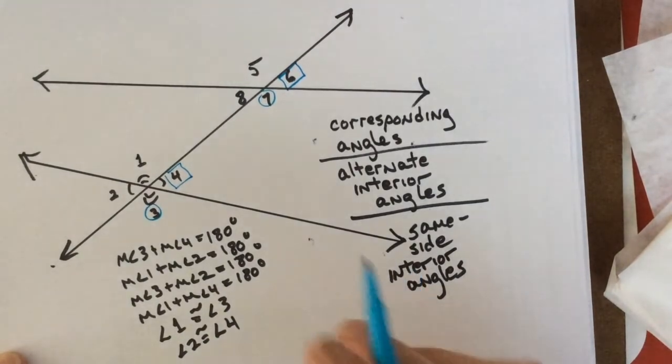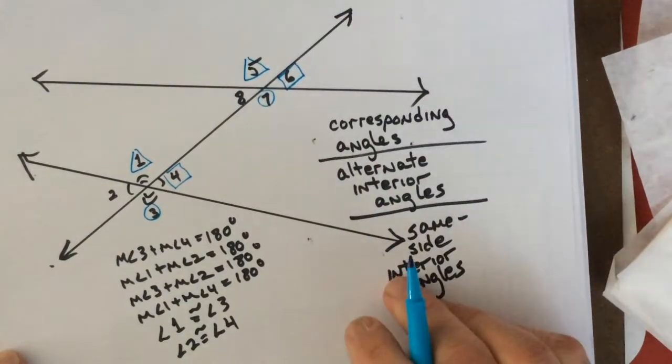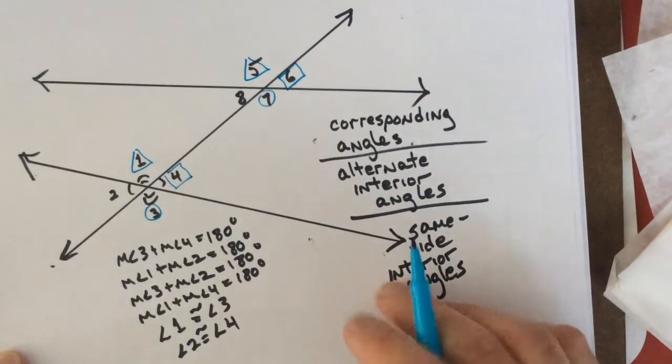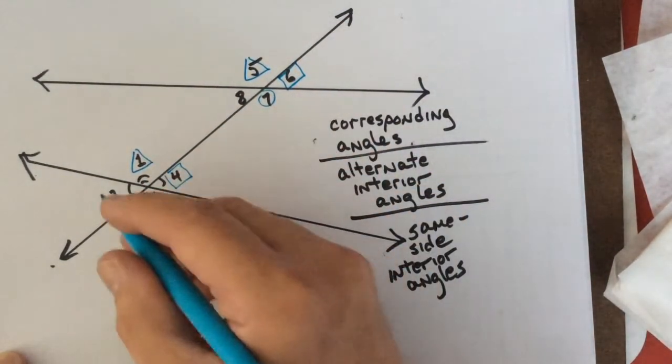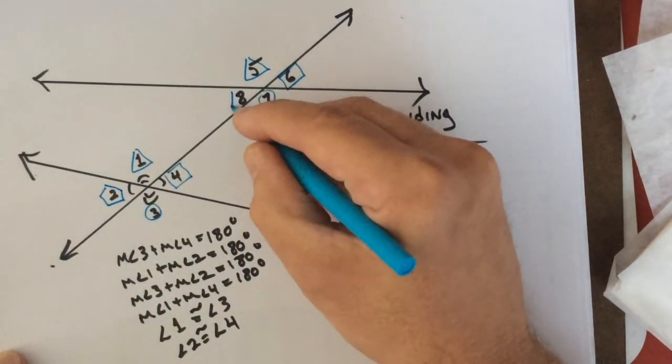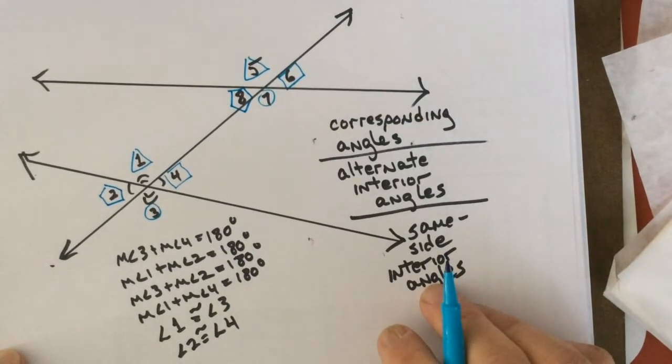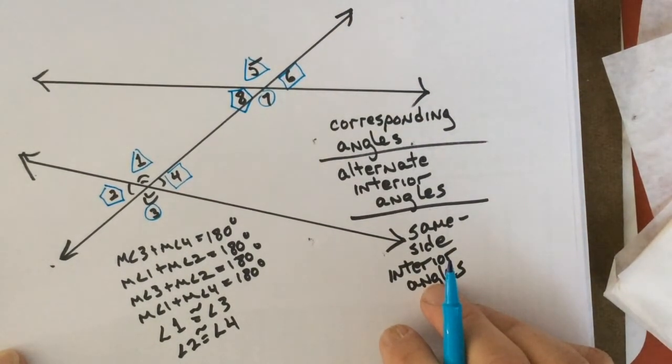One and five. They need to be... they're relating to. So, those are all the corresponding angles.